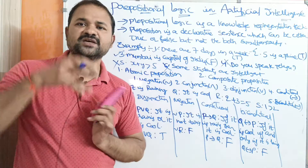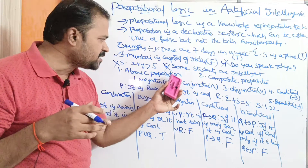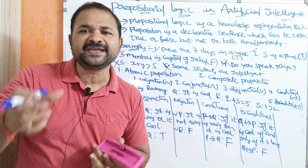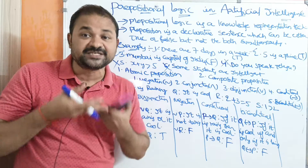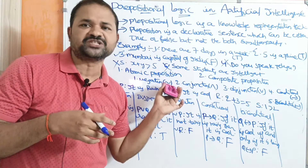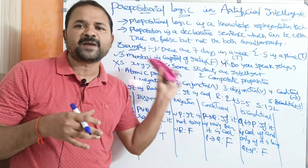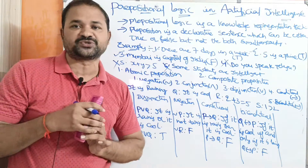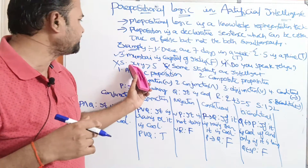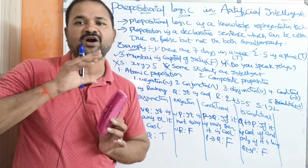Because the truth value is both true and false simultaneously, it is not a proposition. Propositions are mainly classified into two types. The first is atomic proposition and the second is composite proposition. Atomic propositions are simple propositions that can't be divided further; we can't use any logical connectives in them. All the earlier examples — 'There are seven days in a week,' 'Five is a prime number' — are atomic propositions. Out of the six examples, the first three are propositions whereas the fourth, fifth, and sixth are not.